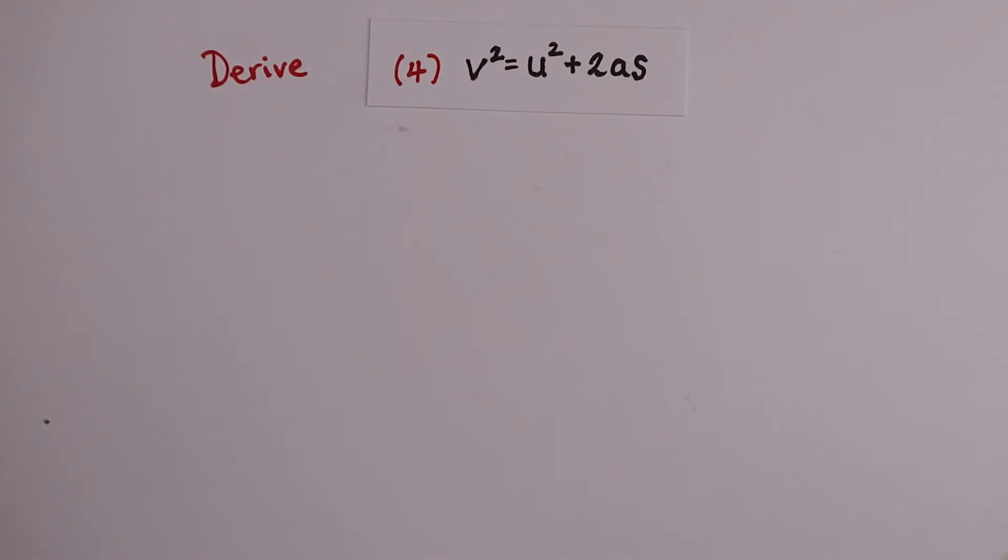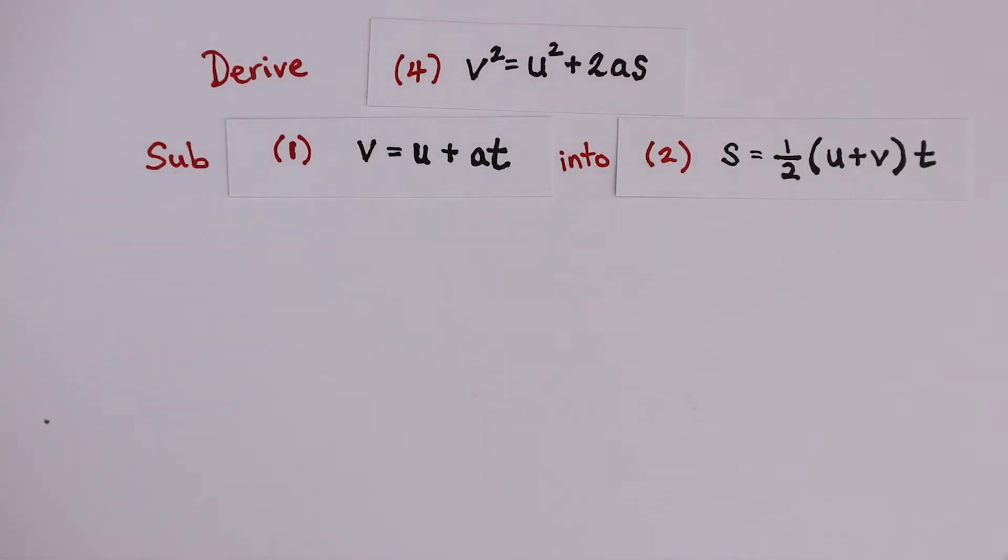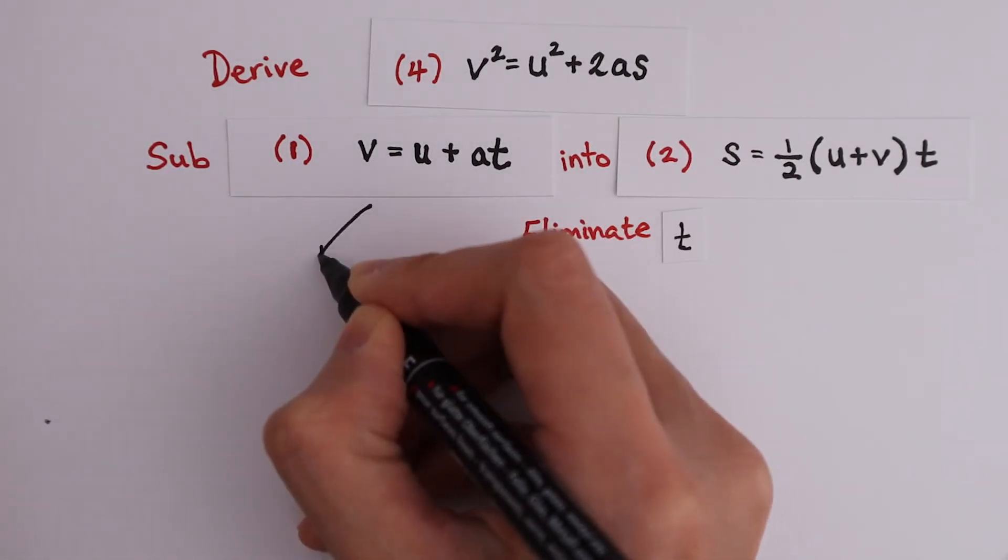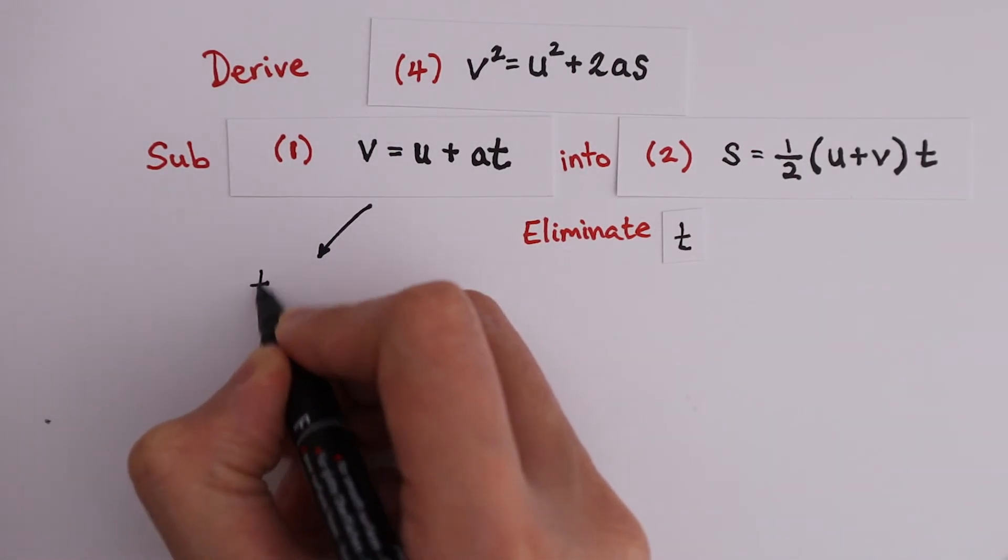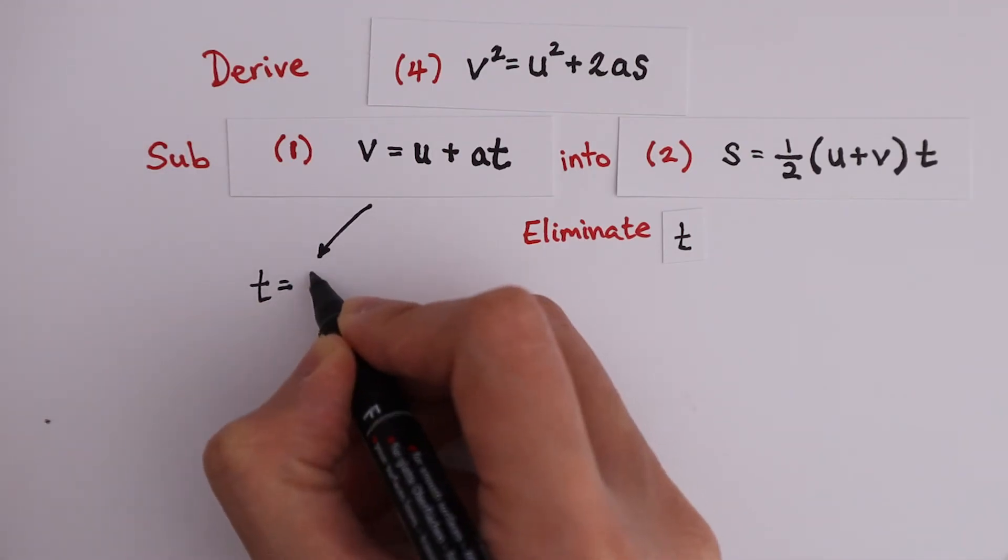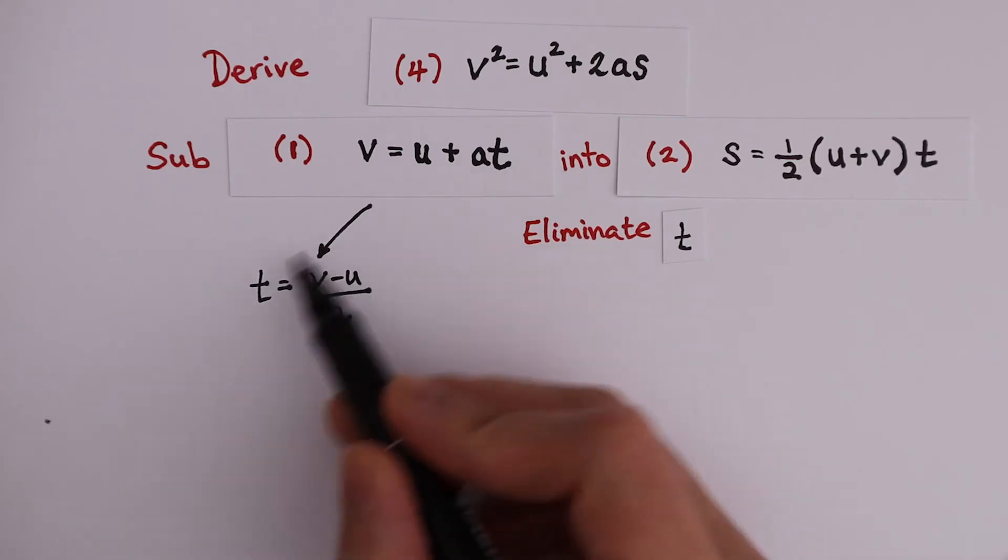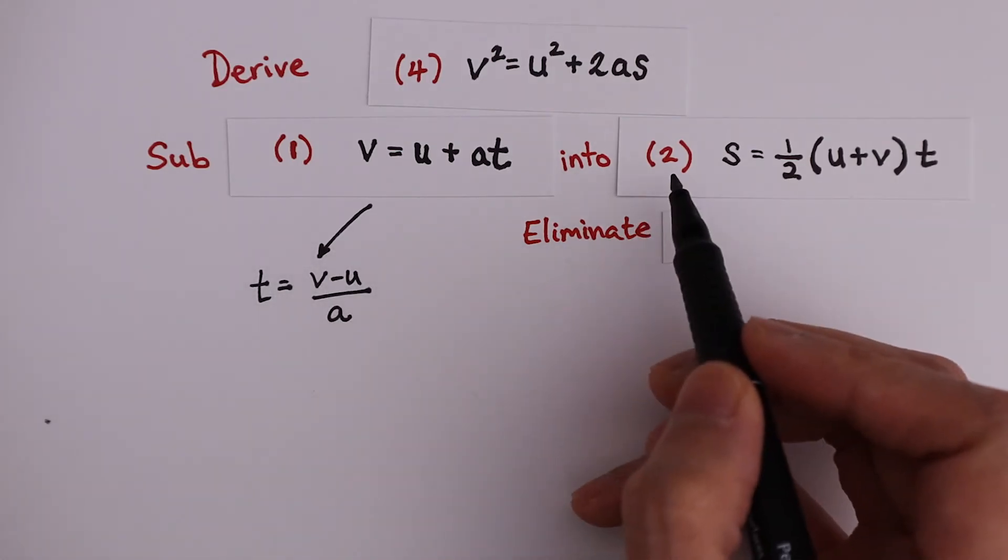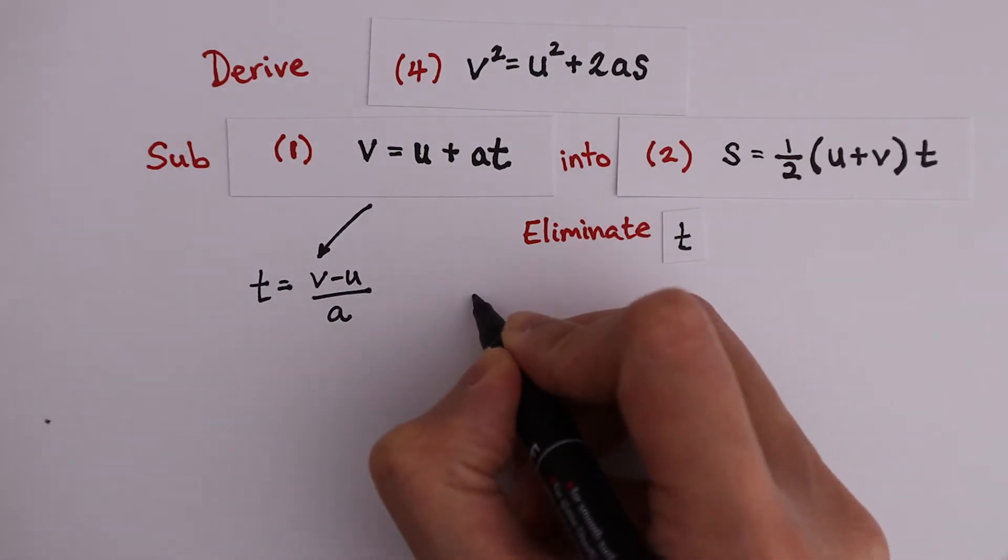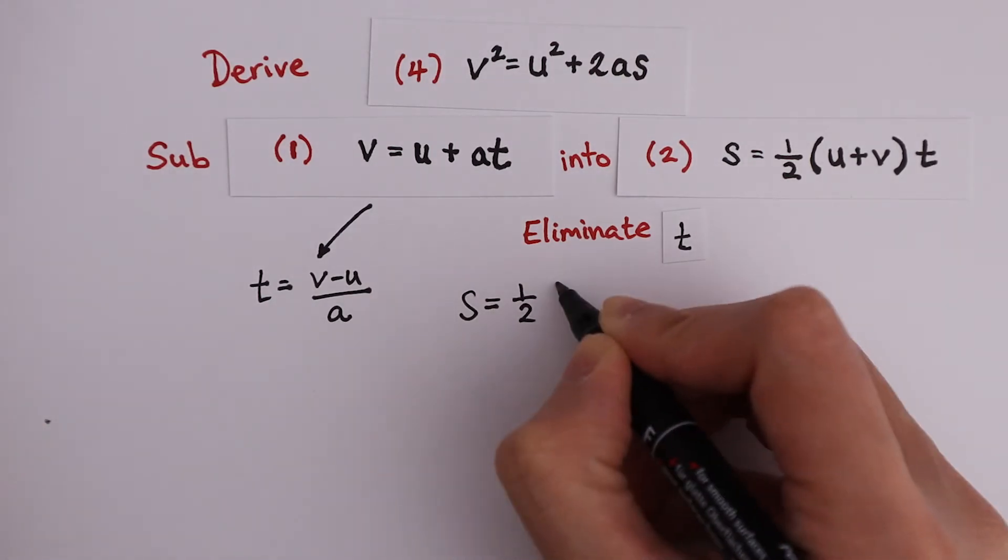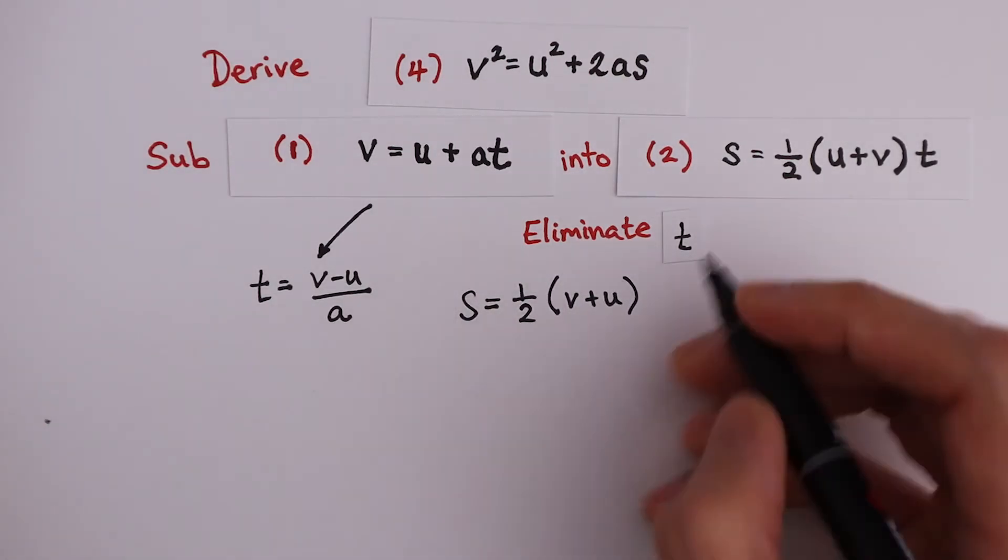For equation 4, again, we're going to derive from equations 1 and 2. But this time, we want to eliminate t. Equation 1 can be rewritten as t is v minus u divided by a. Substituting t into equation 2, we get s is half times v plus u times v minus u divided by a.